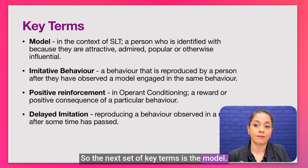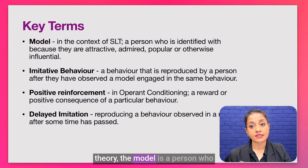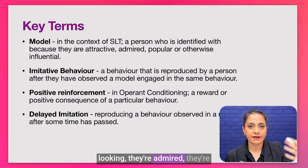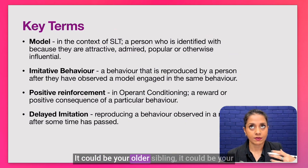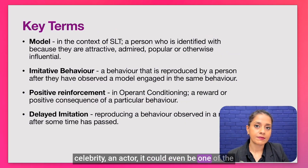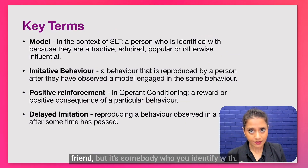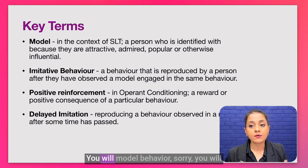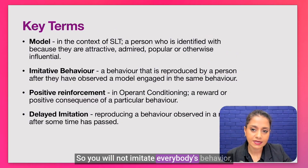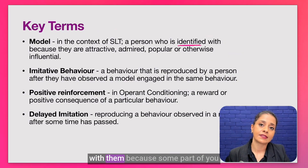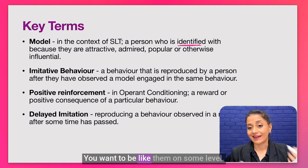The next key term is the model. In the context of social learning theory, the model is a person you identify with in some way — someone you relate to deeply. This could be because they are good-looking, admired, or popular, or otherwise influential: an older sibling, a parent, a teacher, a celebrity, or a best friend. You will not imitate everybody's behavior, but you will imitate the behavior of a model because you identify with them and admire them on some level.